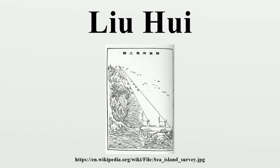Liu Hui was an ancient Chinese mathematician who lived in the state of Cao Wei during the Three Kingdoms period of Chinese history. In 263, he edited and published a book with solutions to mathematical problems presented in the famous Chinese book of mathematics known as The Nine Chapters on the Mathematical Art. He was a descendant of the Marquess of Zhejiang of the Han Dynasty, corresponding to current Zhejiang township of Shandong province.